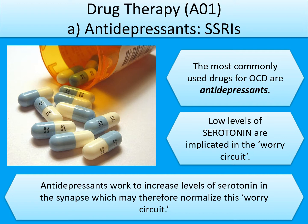The first antidepressants we'll look at are called SSRIs — selective serotonin reuptake inhibitors. People with OCD tend to have low levels of serotonin. Antidepressants work by increasing serotonin levels at the synapse, which should break and normalise the worry circuit in the brain, making the person feel calmer so they won't feel compelled to perform their compulsion.